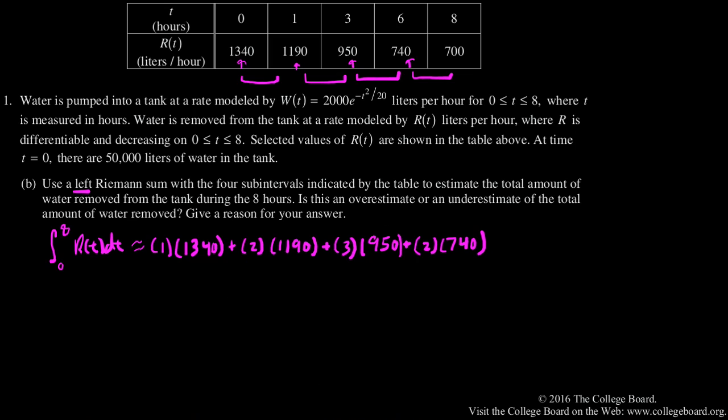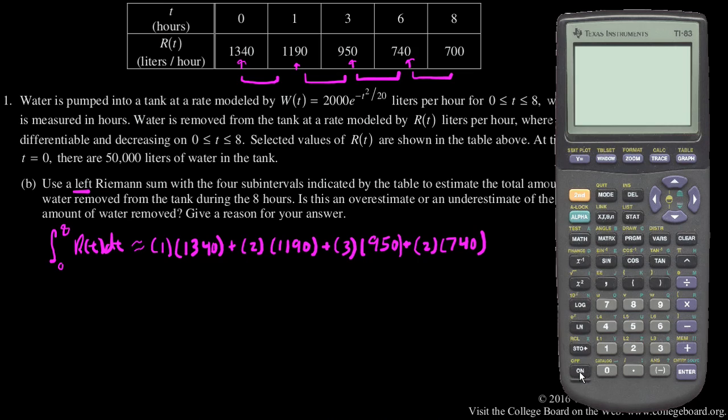And it is a calculator problem, so I will go ahead and use the calculator to do this. I'll just type it in straight away. So plus two times 1190, plus three times 950, plus two times 740. And that gives us 8,050.